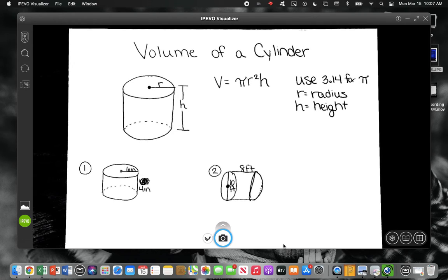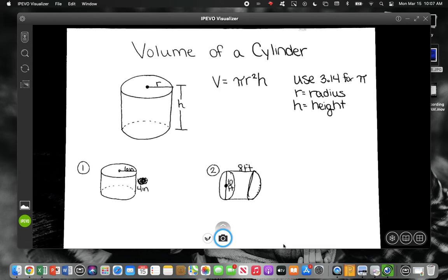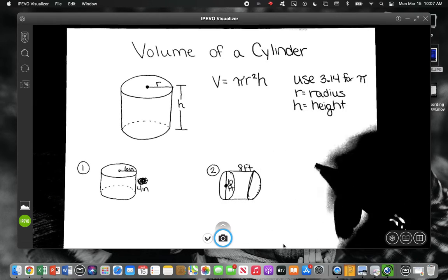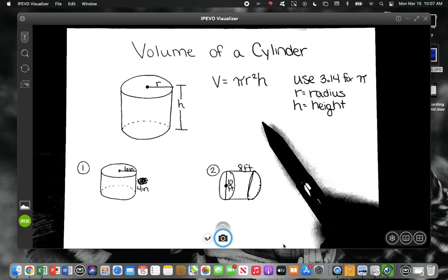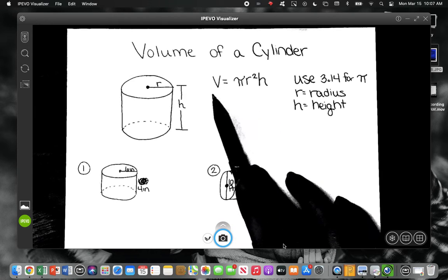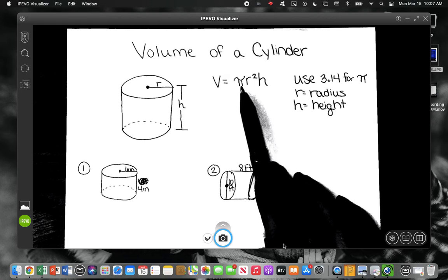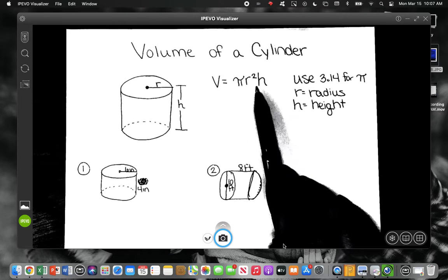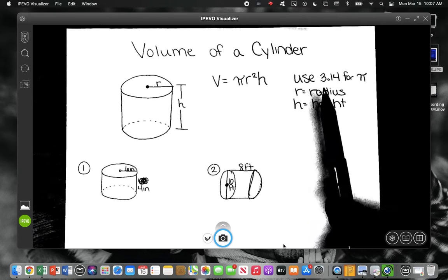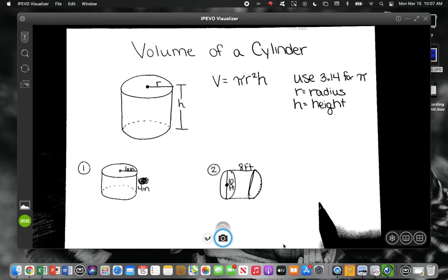Alright guys, today we're going to do volume of a cylinder. If you look at the top of your paper there, you have the formula. The volume of a cylinder is π r squared times h. Today we're going to use 3.14 for π when we type that into our calculators. We know that r is the radius and h is height, right?